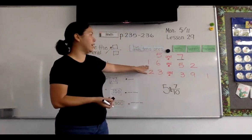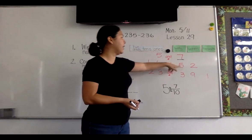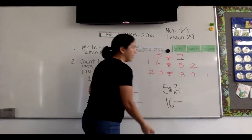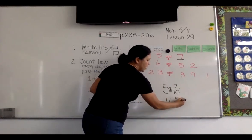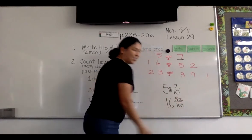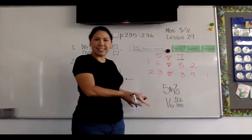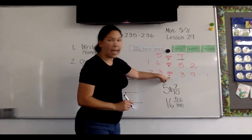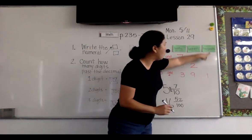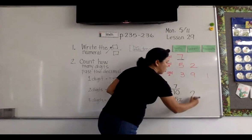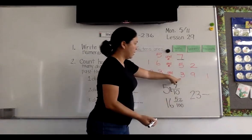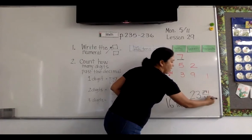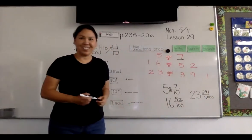So how would we write this one? Sixteen and fifty-two hundredths. And when you read it like that it makes it easy. Let's look at the next one: twenty-three and three hundred ninety-one thousandths. Just like that.